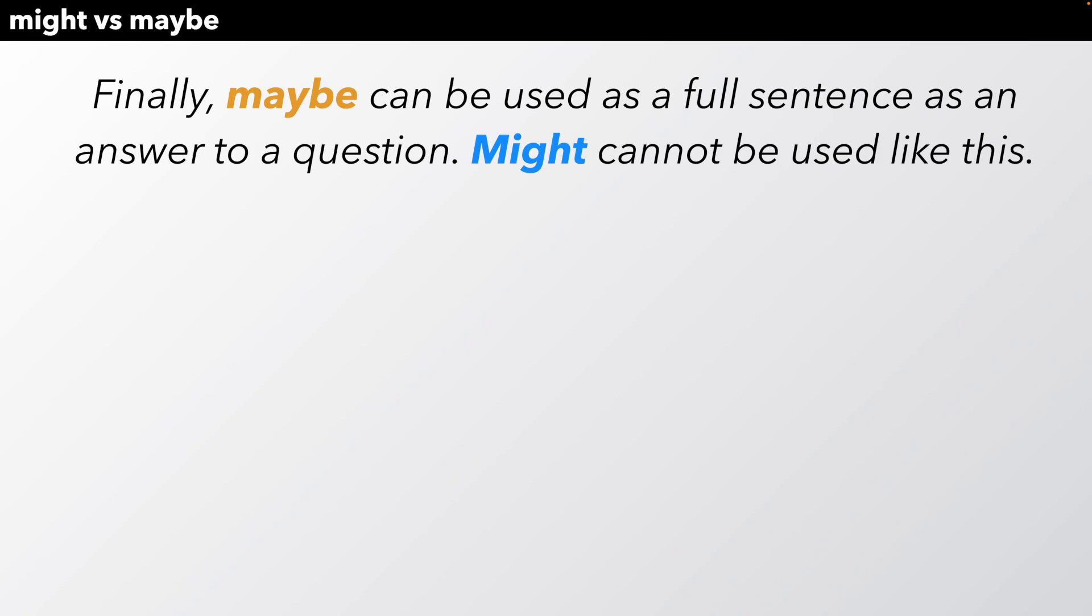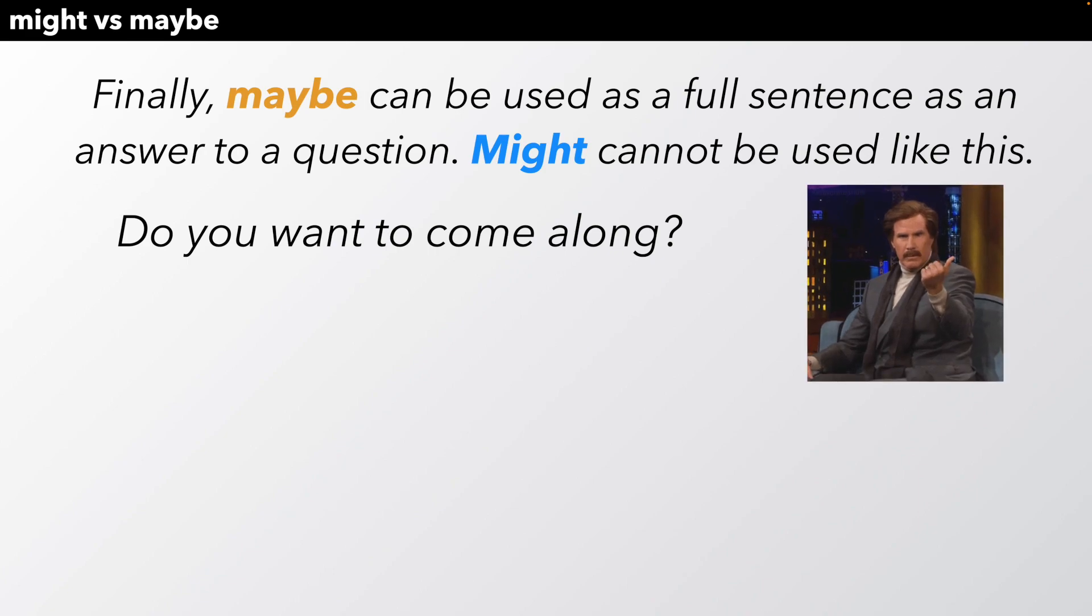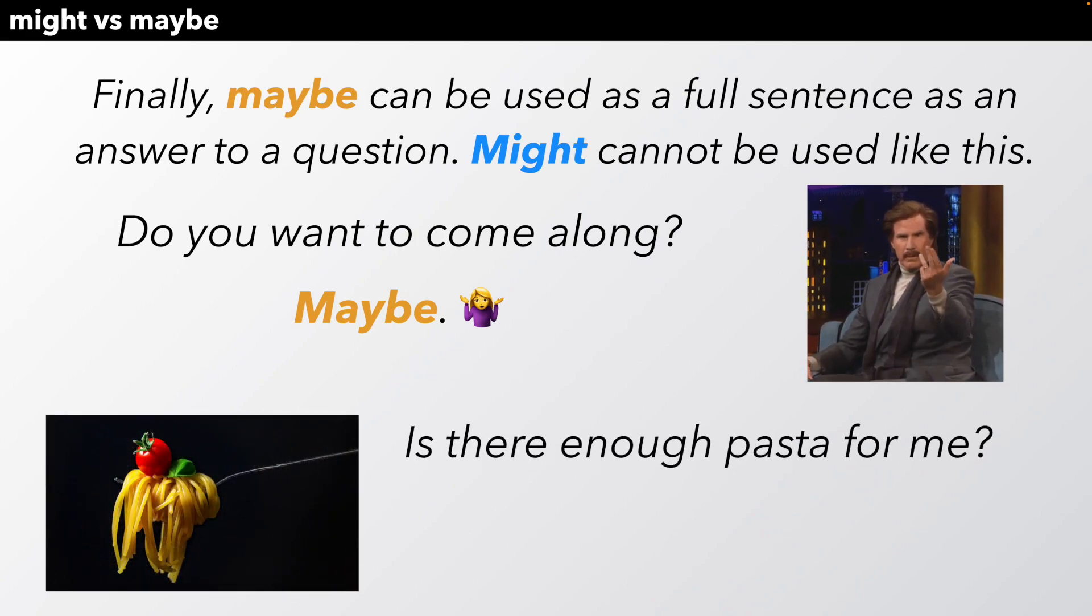Finally, maybe can be used as a full sentence as an answer to a question. Might cannot be used like this. Do you want to come along? Maybe. That's a full sentence as an answer to the question. And that's okay. Is there enough pasta for me? Maybe not. This is okay to use maybe or maybe not as a full answer to a question.